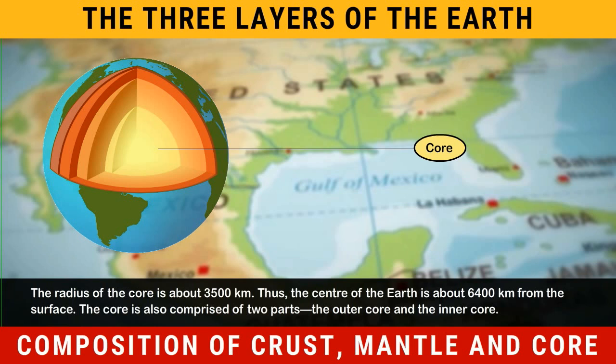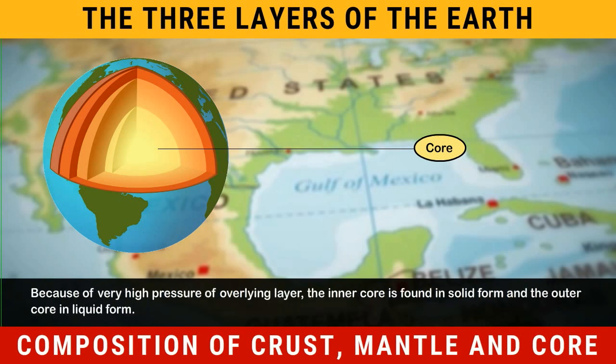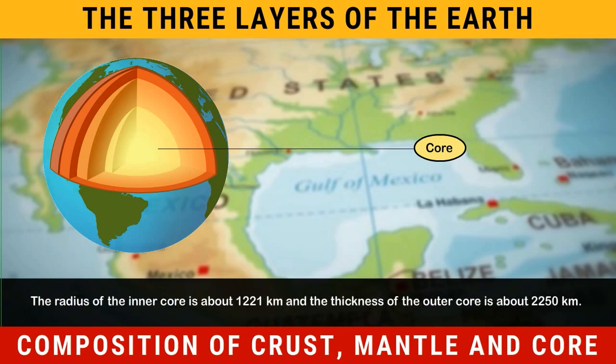The core is also comprised of two parts: the outer core and the inner core. Because of very high pressure of the overlying layer, the inner core is found in solid form and the outer core in liquid form. The radius of the inner core is about 1,221 km and the thickness of the outer core is about 2,250 km.